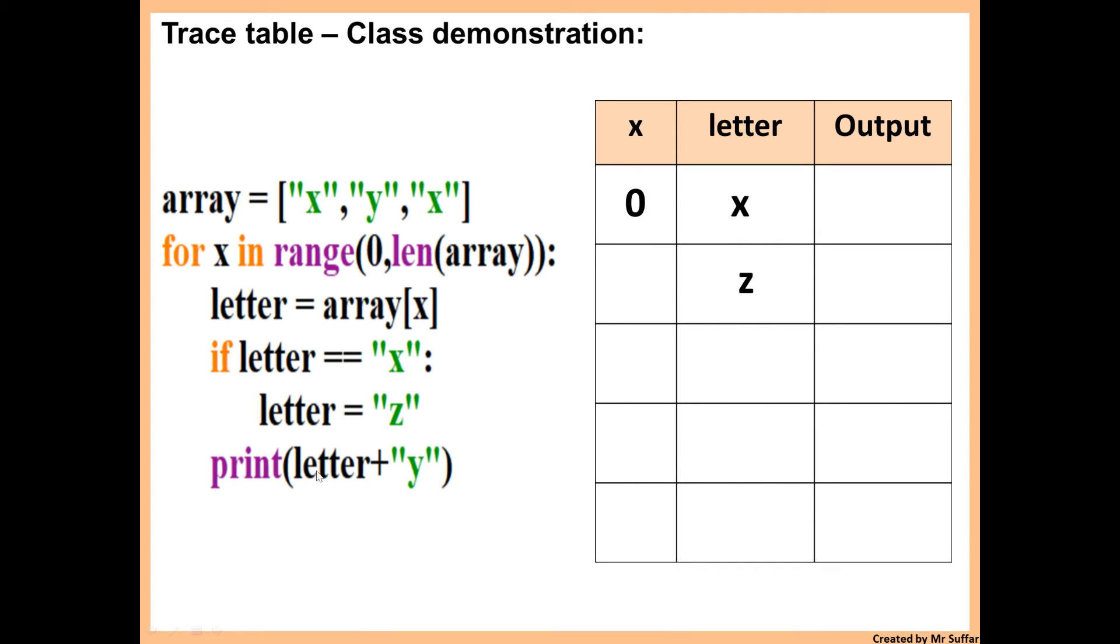Then it says print letter plus y. So letter plus y, this is z plus y. Now x does not change in this specific row. So we just keep it as zero. So once we display z plus y,